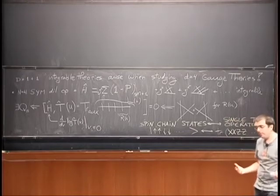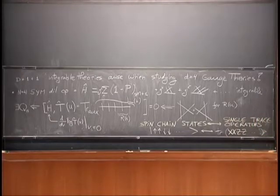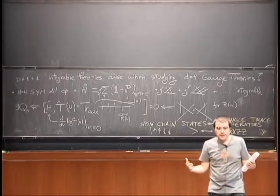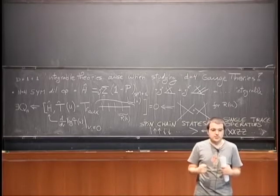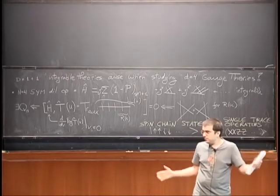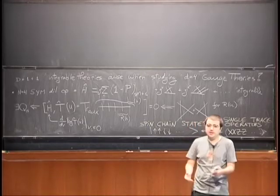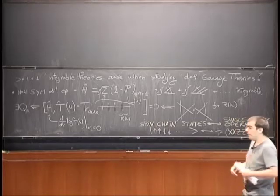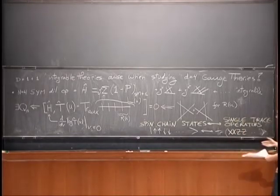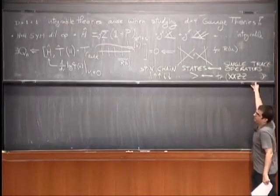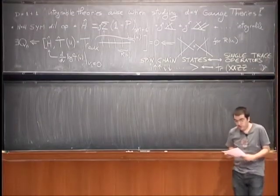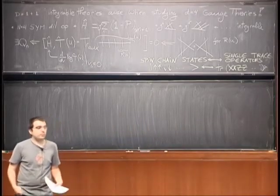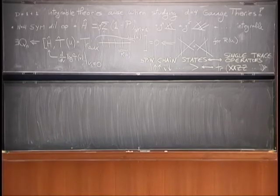Then we will probably find some integrability structures, because the integrability behind all this can be explained from integrability of the worldsheet of the string theory that N=4 is dual to. All these different processes — like scattering amplitudes, correlation functions, etc. — are basically made out of the same worldsheet with some different topology. So N=4 super Yang-Mills has a relatively simple 1+1-dimensional description if we are smart enough. If we find it, then we can use techniques of integrability to solve for the quantity we want at any coupling, which is of course very exciting.